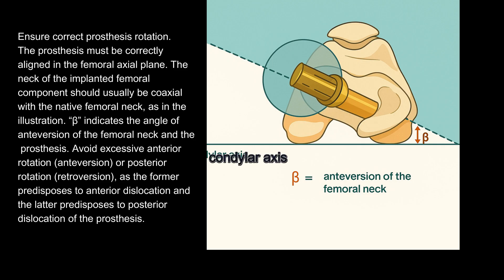The prosthesis must be correctly aligned in the femoral axial plane. The neck of the implanted femoral component should usually be coaxial with the native femoral neck, as shown in the illustration. Beta indicates the angle of antiversion of the femoral neck and the prosthesis.